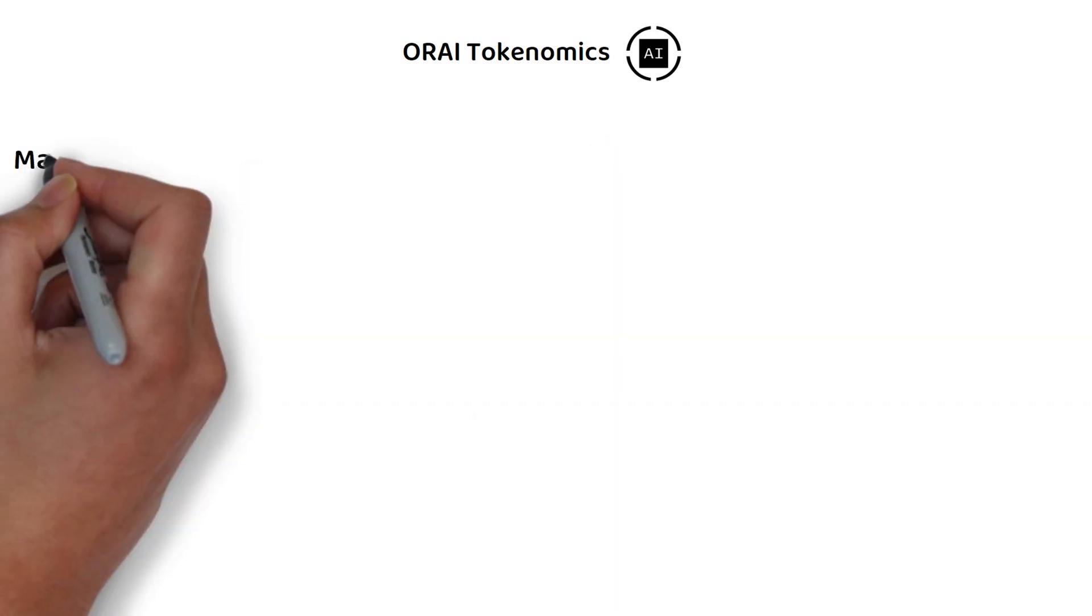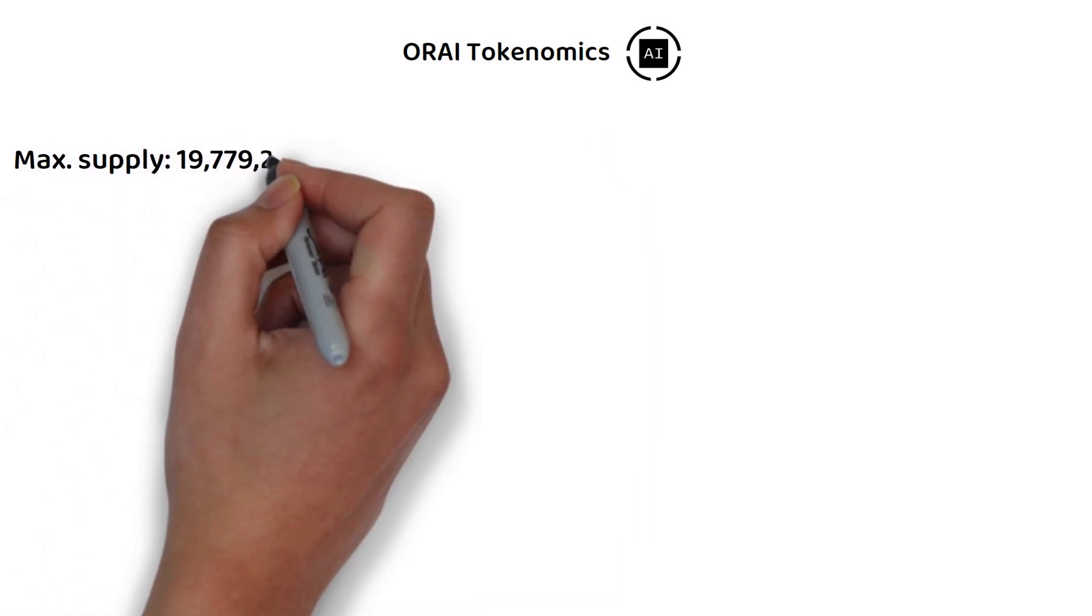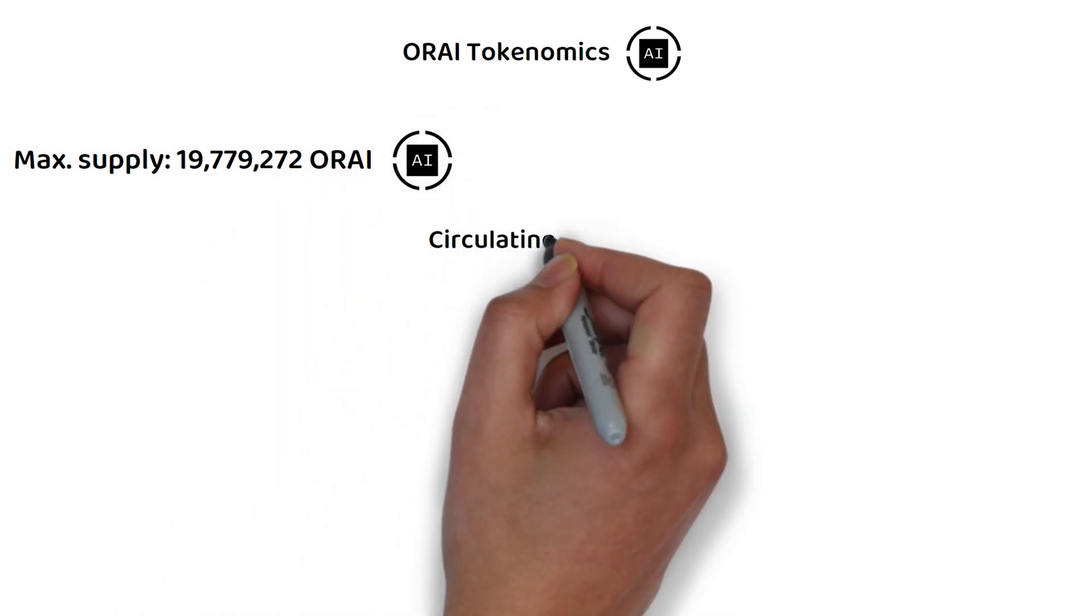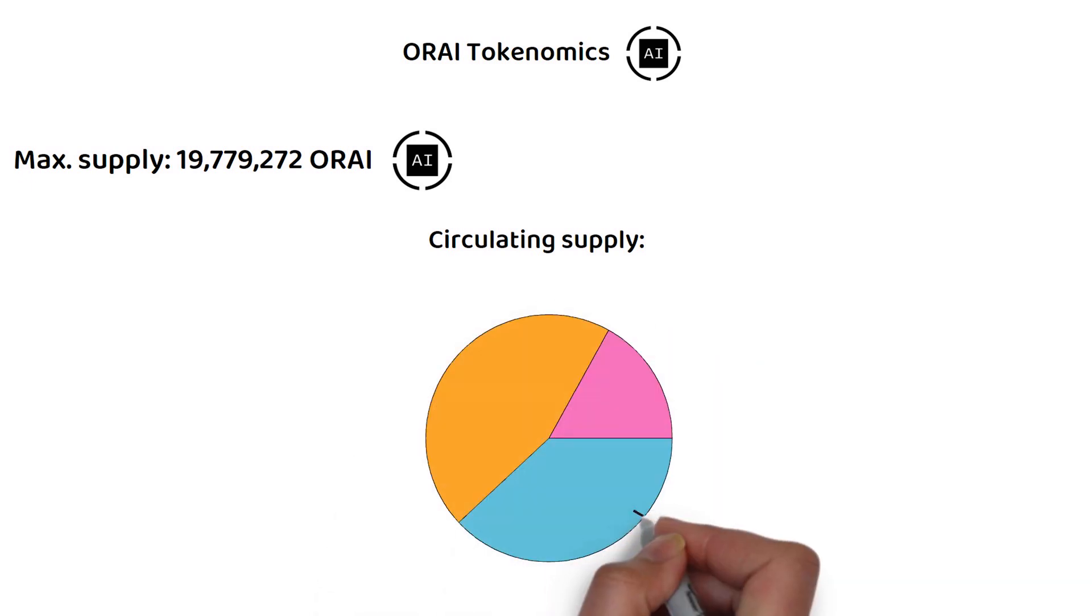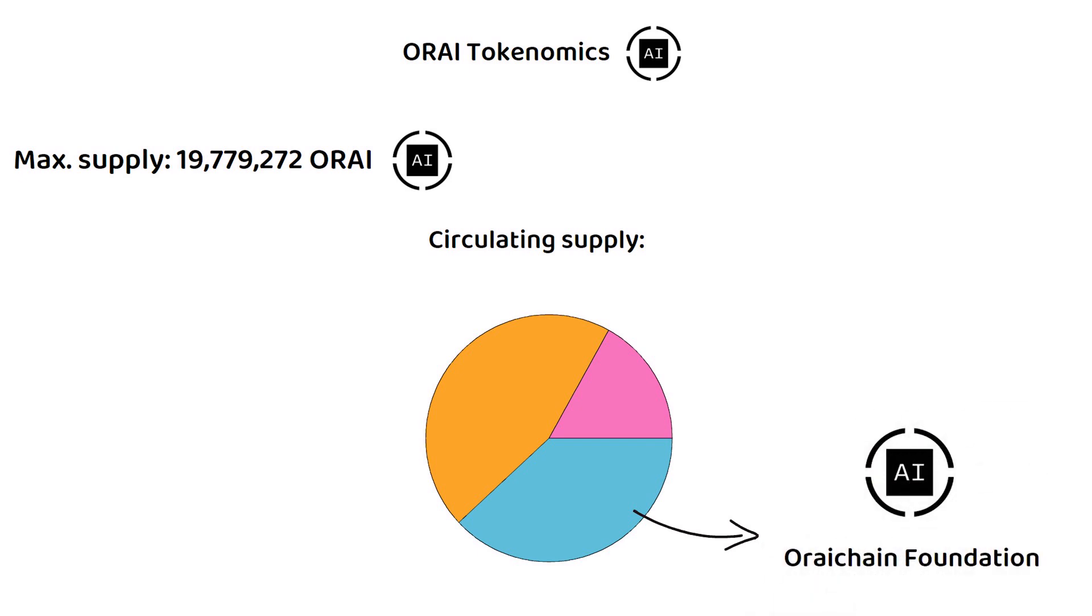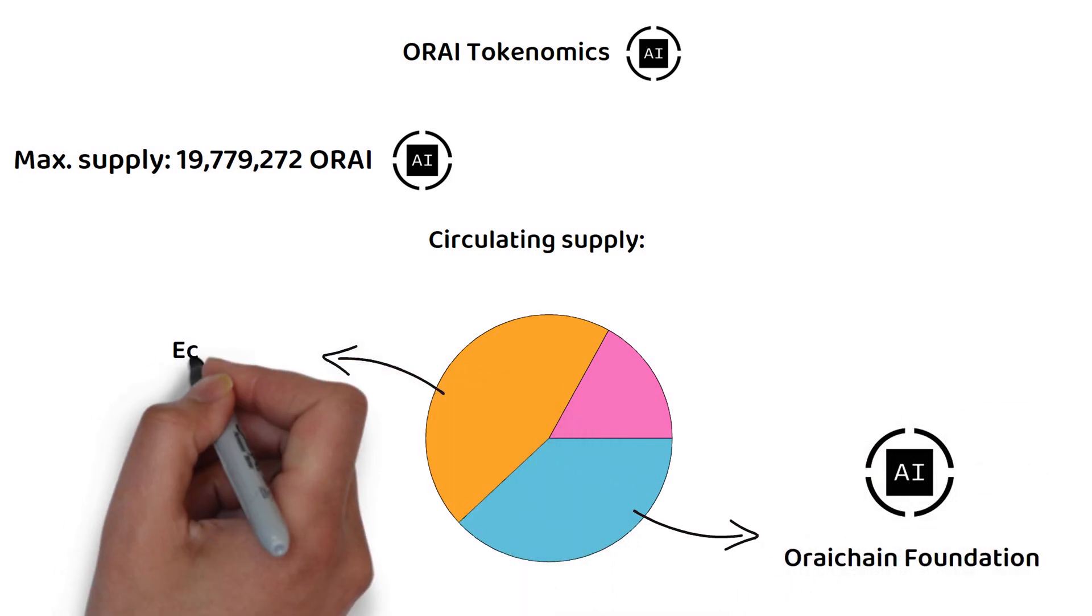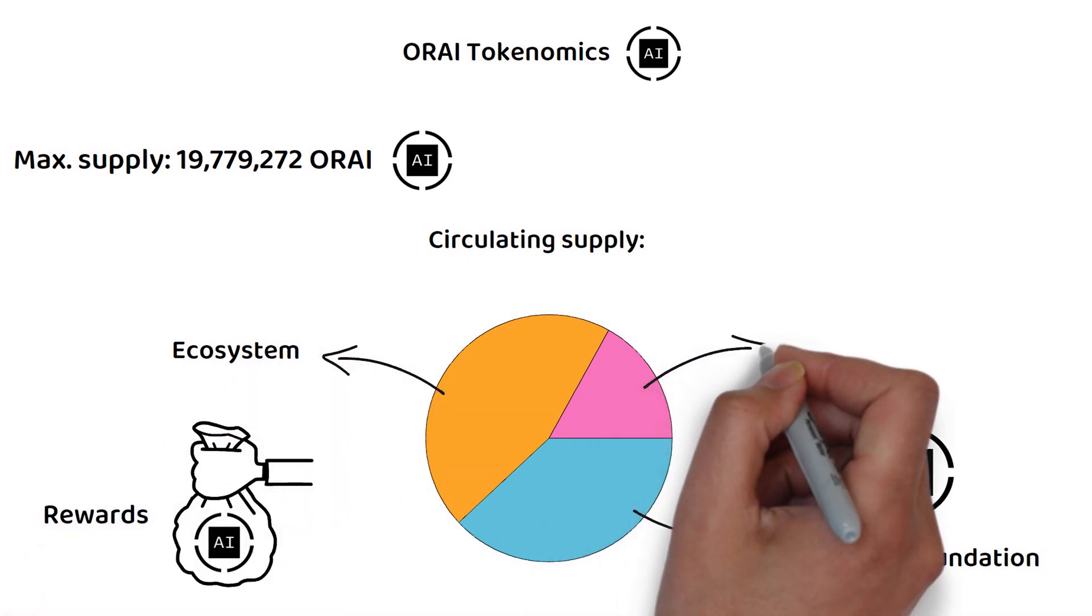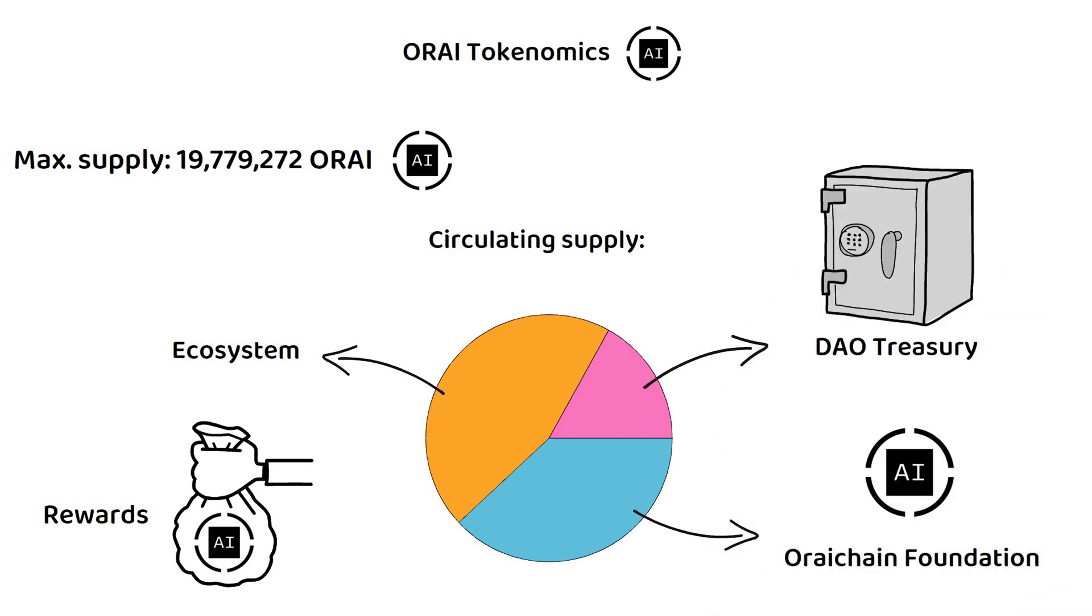In total, there will only ever be just under 20 million ORI tokens. By the end of the remission schedule in 2027, roughly 38% of all ORI tokens will be in the possession of the ORI chain foundation. About 45% will be in the hands of the ecosystem, which goes towards activities such as block rewards, and the final 17% will be under control by the DAO treasury.